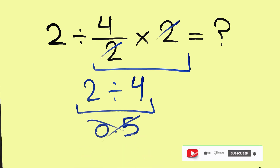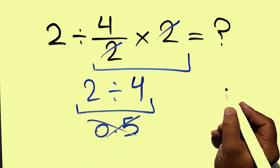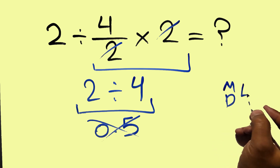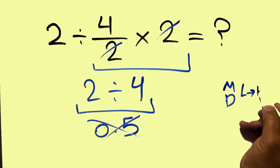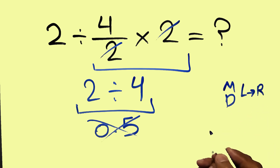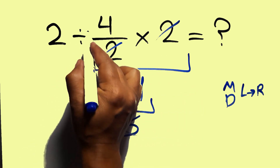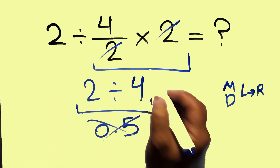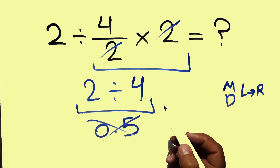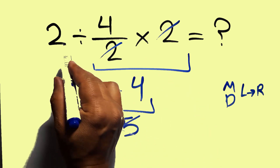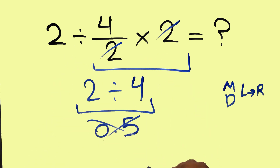But this answer is not correct, because according to the order of operations, multiplication and division have equal priority, and we have to perform them left to right. So first we have to do this division, then this multiplication. If we do this multiplication first, this division is wrong.